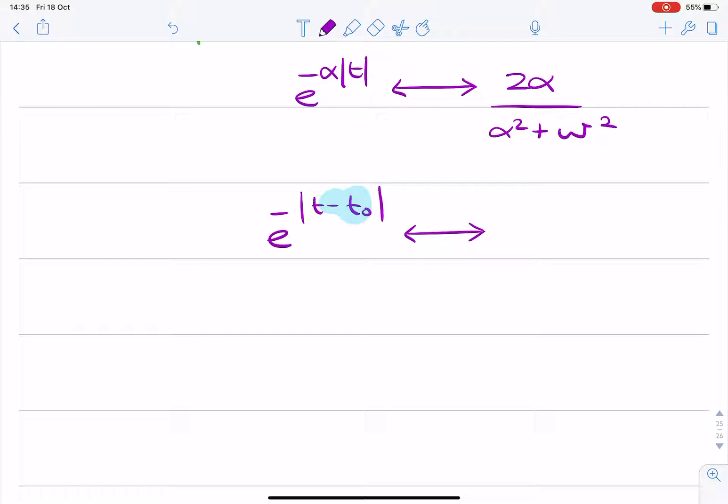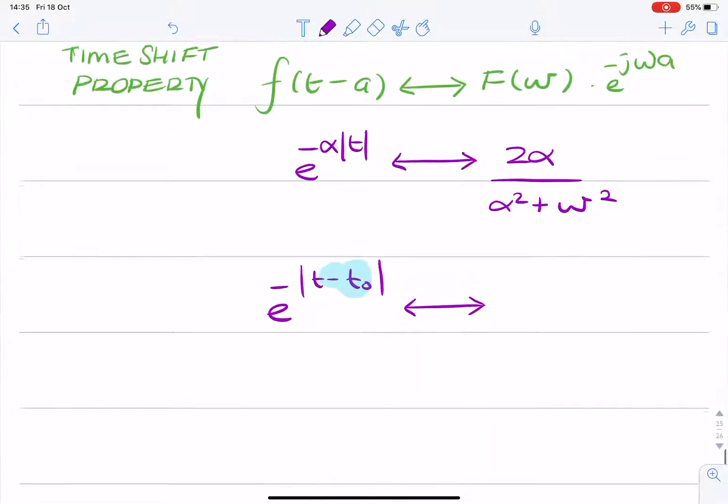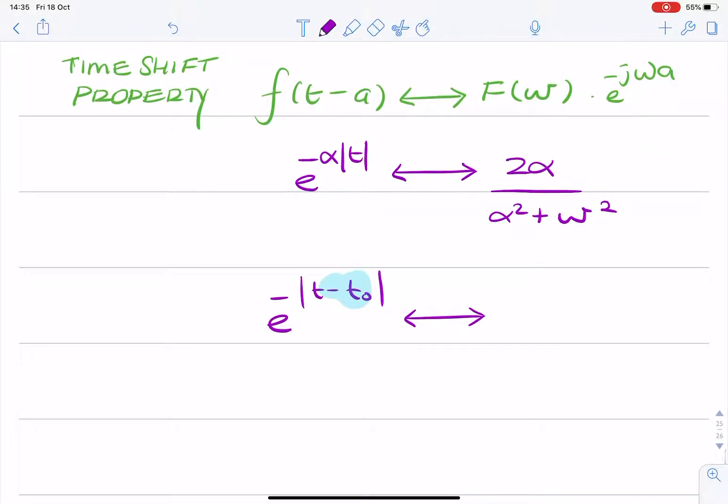It's natural we would look to the time shift property of the Fourier transform that says, if you ever have a shift in time, then the spectrum is unchanged except for multiplication by some complex exponential.